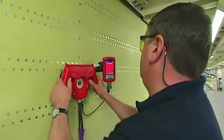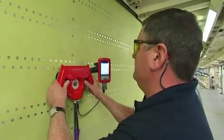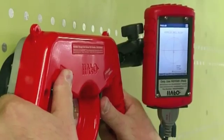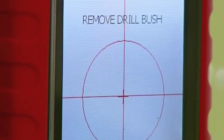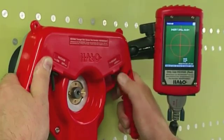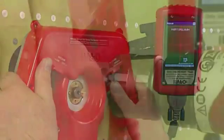By using the inbuilt suction pads, the unit is moved along the wing, using the mapping screen to detect the exact position of the target. The crosshairs on the display screen allow the operator to accurately position the HALO sensor before drilling starts.